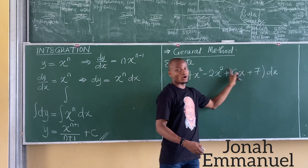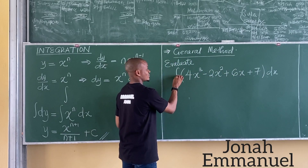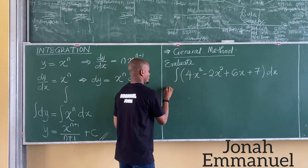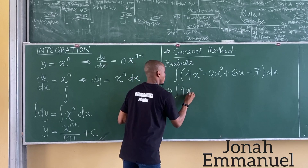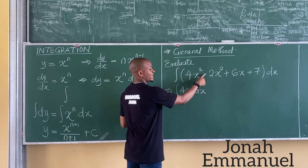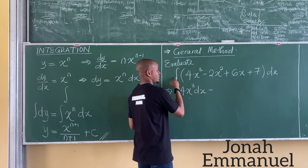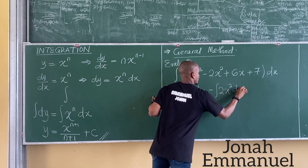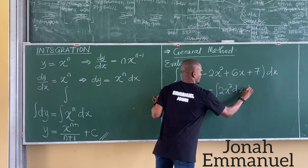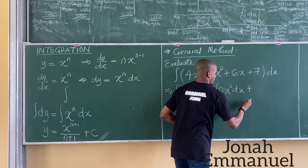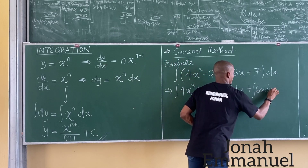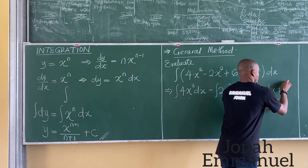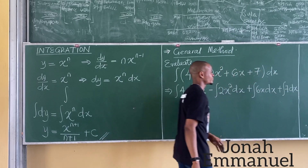I will attach the dx to all of them. So: integral of 4x cubed dx, minus integral of 2x squared dx, plus integral of 6x dx, plus integral of 7 dx.